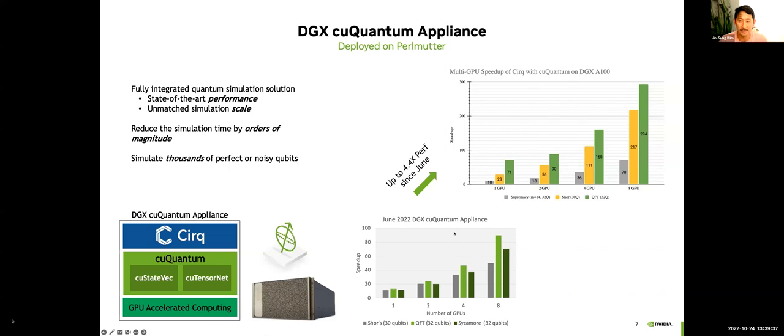Since then, we've put in a couple of performance optimizations solely in software. In our most recent release, we're getting almost a 300x increase in performance for the Quantum Fourier Transform for 32 qubits. This is using all eight GPUs in a DGX A100 box. Really nice strong scaling and really nice performance benchmarks overall.